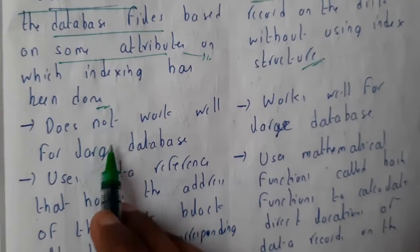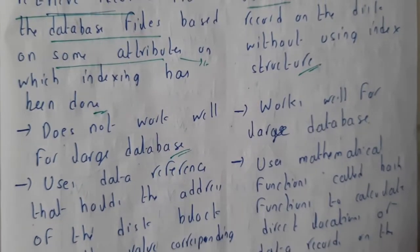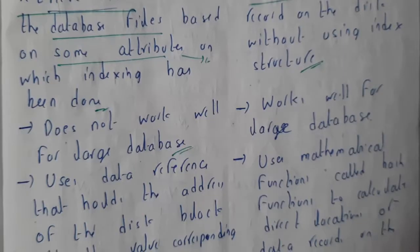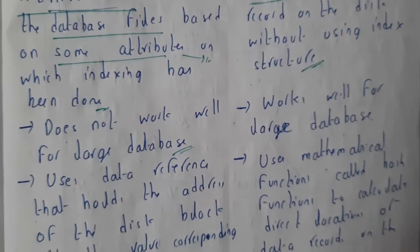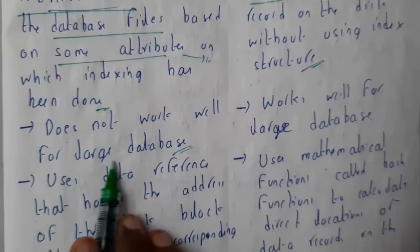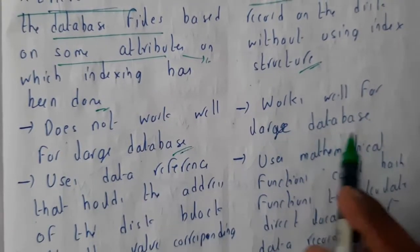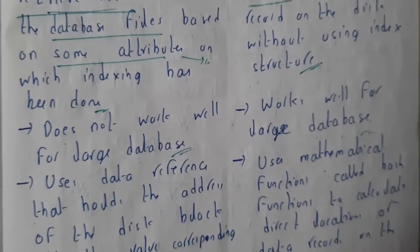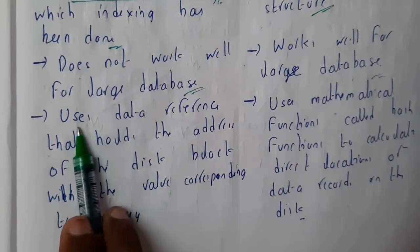Indexing does not work well when there is a large database, whereas hashing works well for large databases. Hashing works really efficiently even if the database is really large or we are having many records.